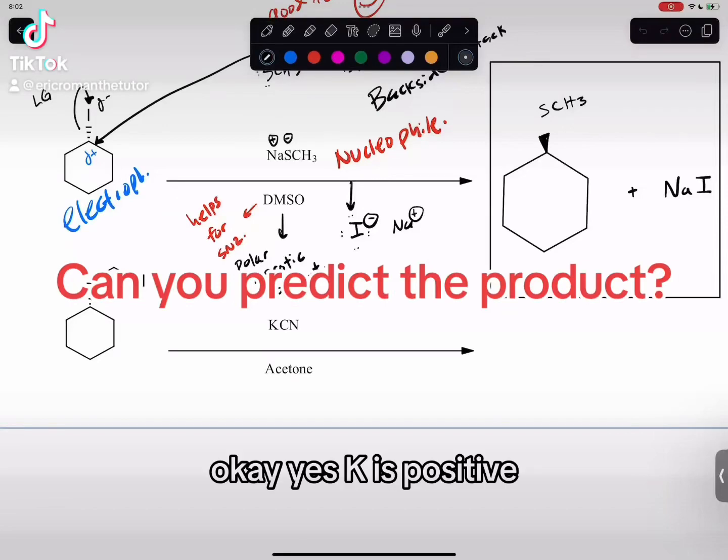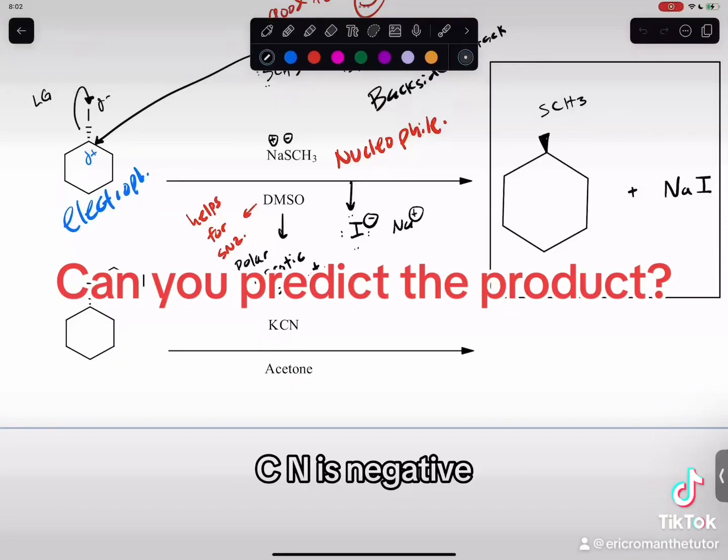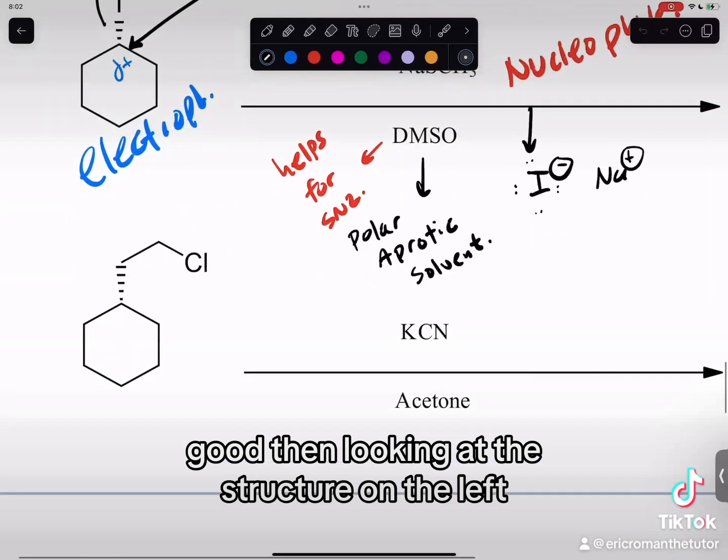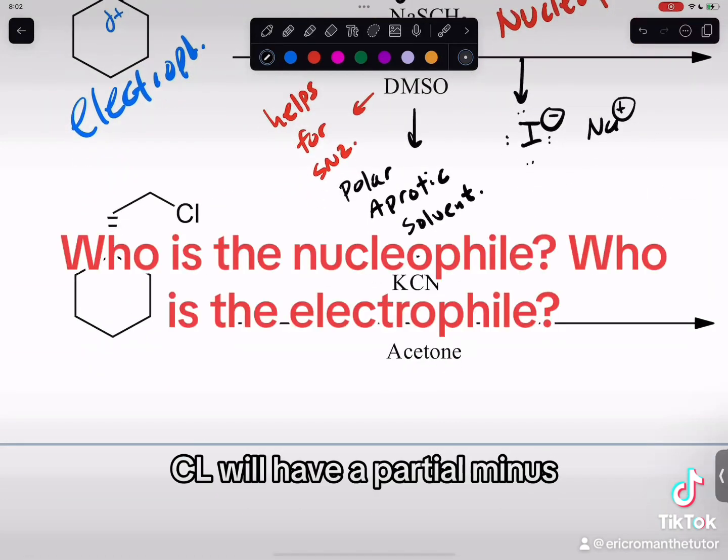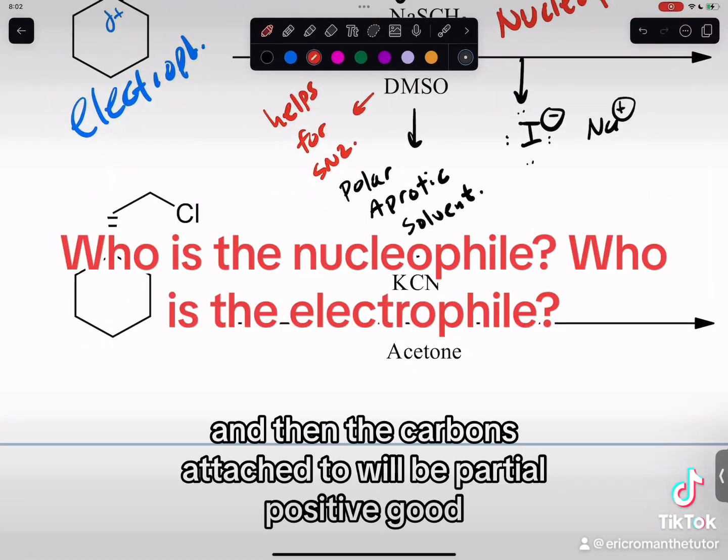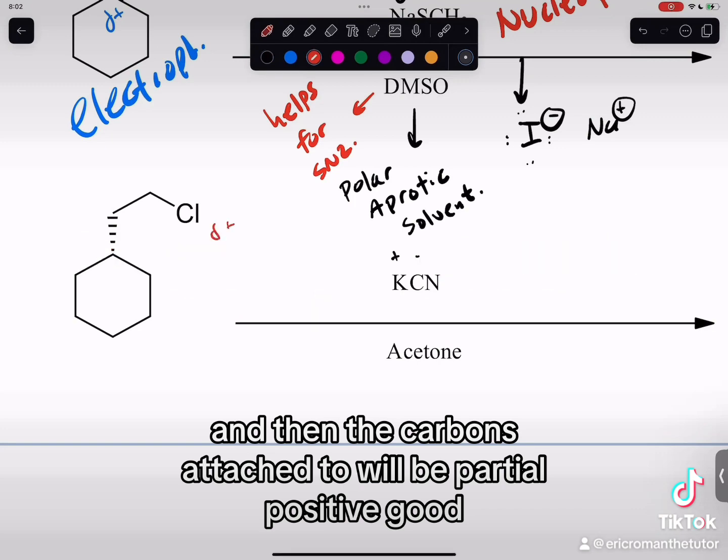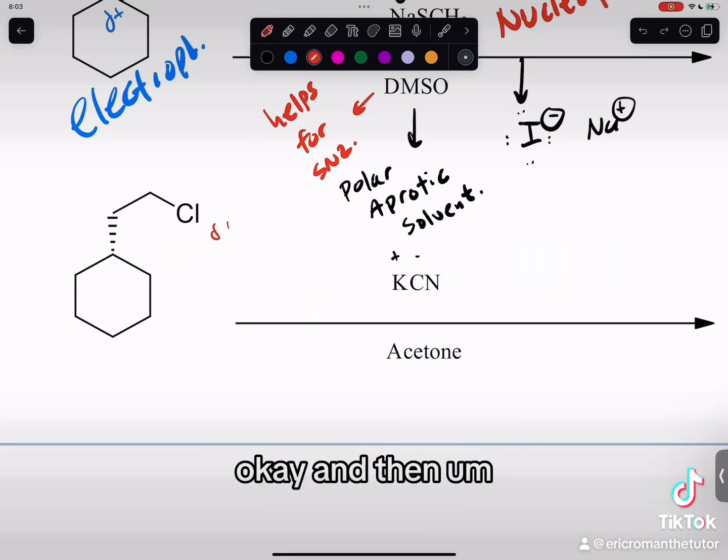Okay, yes. K is positive, CN is negative. Good. Then looking at the structure on the left, Cl will have a partial minus and then the carbon attached to will be partial positive. Good, okay.